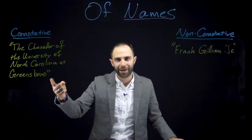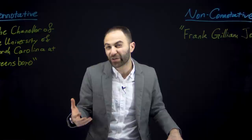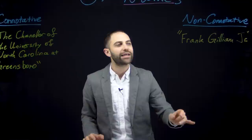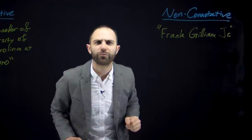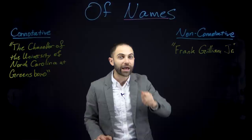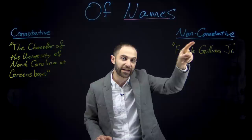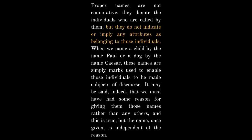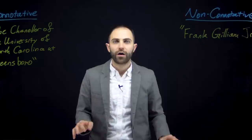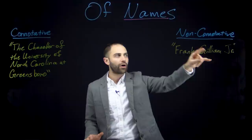Mill then gives an argument — the only real argument in the paper — for the controversial claim that proper names like Frank Gilliam Jr. or North Carolina are non-connotative. Proper names are not connotative; they denote the individuals who are called by them, but they do not indicate or imply any attributes as belonging to those individuals. When we name a child Paul or a dog Caesar, these names are simply marks used to enable those individuals to be made subjects of discourse. So far, his claim is that proper names just pick out objects — they don't give us any information about those objects.